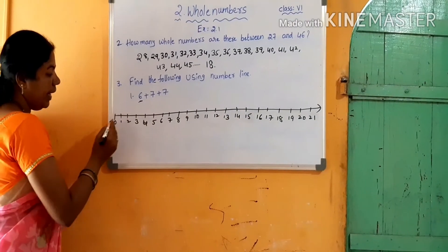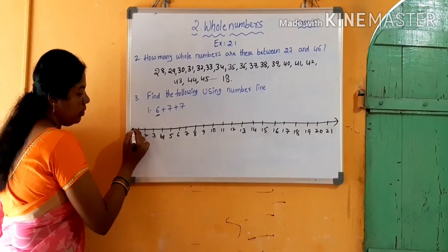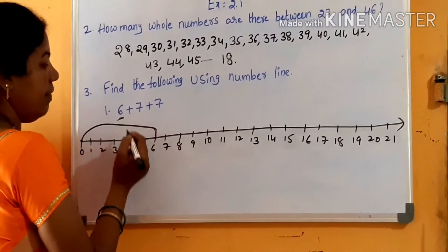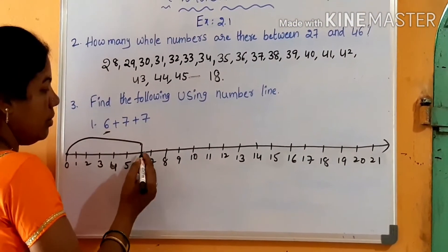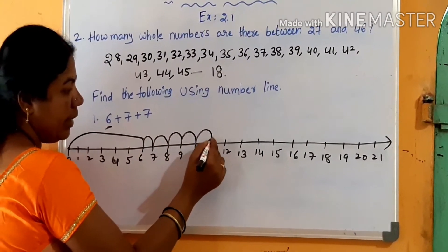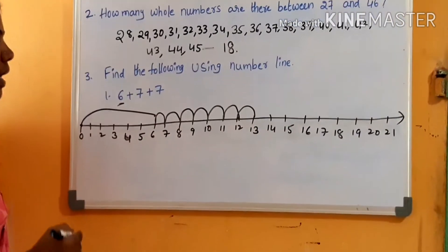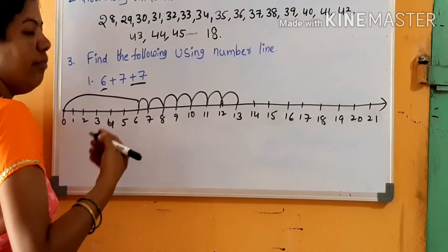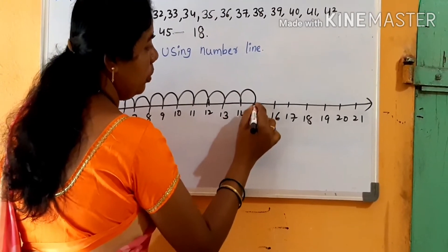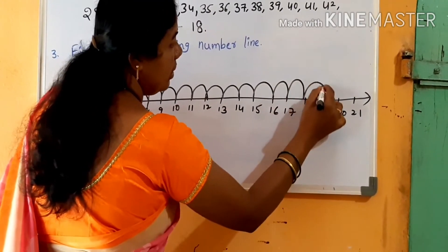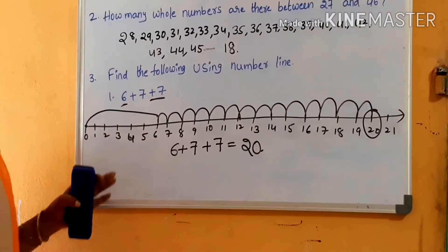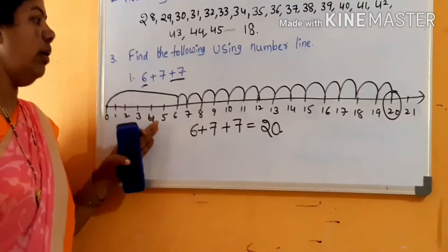The first digit is 6; we start from 0 and come to 6. Next, plus 7 — so how many steps do we move to the right? 7 steps: 1, 2, 3, 4, 5, 6, 7. Then add 7 again — move 7 more steps to the right: 1, 2, 3, 4, 5, 6, 7. So we get 20. That is how we do addition on the number line.